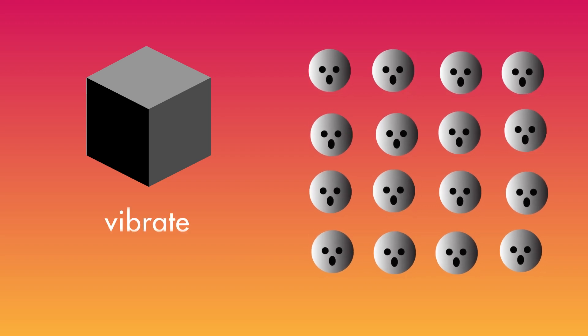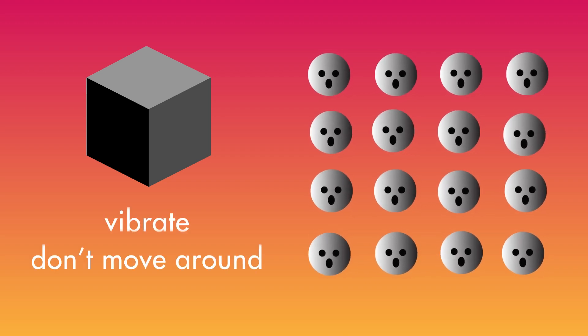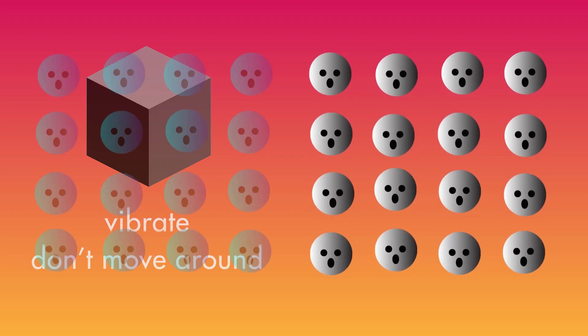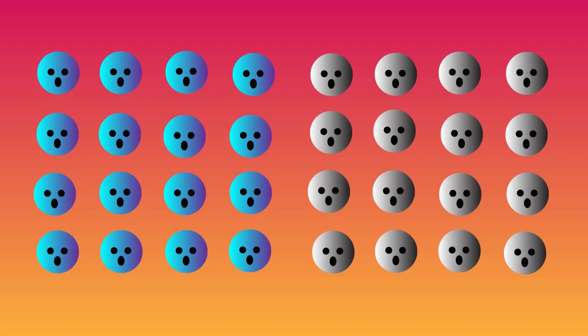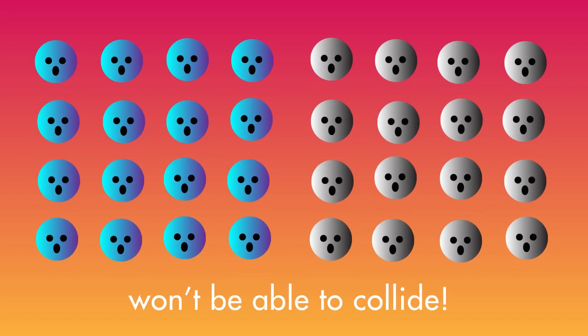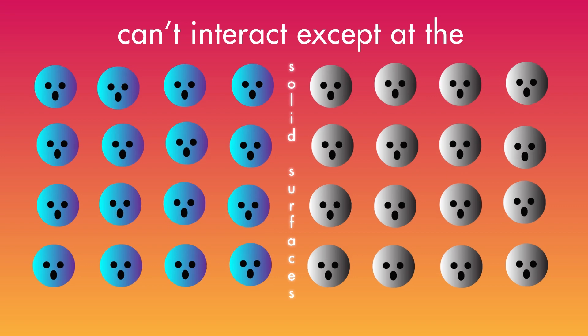The collision between two molecules is pretty straightforward. At any temperature above absolute zero, molecules have kinetic energy, so they're always moving. If two molecules move in such a way that they hit each other, then that's a collision. One point to keep in mind: in solids, the molecules can vibrate but they stay in place — they don't move around. Molecules of different solid reactants won't be able to collide because the molecules can't interact except at the solid surfaces.